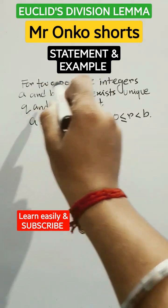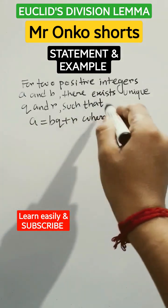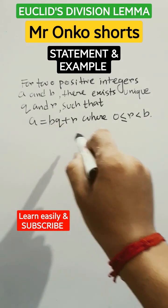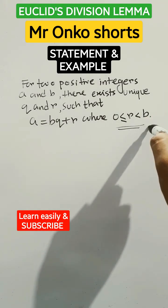The statement is: for two positive integers A and B, there exist unique integers Q and R such that A equals BQ plus R, where 0 is less than or equal to R, which is less than B. This is the condition of R.